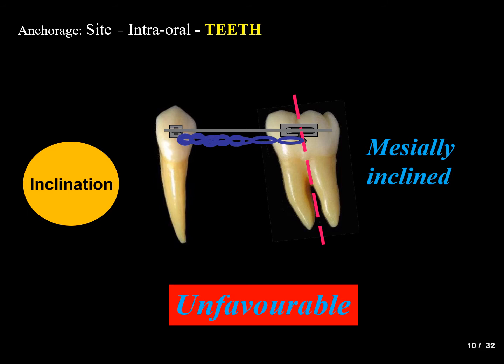The next parameter is tooth inclination. If a molar is mesially inclined and you are trying to retract a canine into the extraction space, it provides unfavorable anchorage — the molar will tip further into the extraction space, causing loss of anchorage. A mesially inclined tooth provides less anchorage when a tooth is being retracted in the same direction.